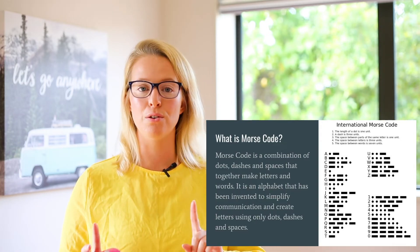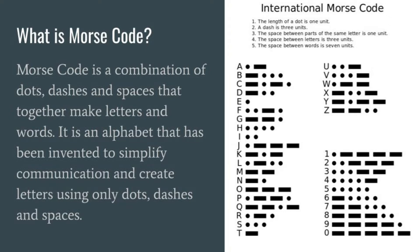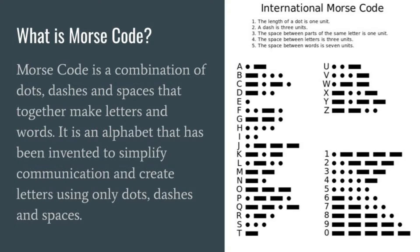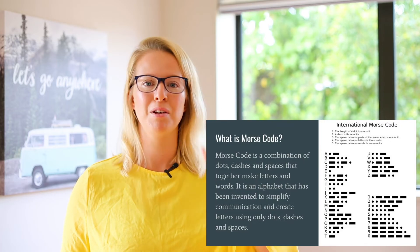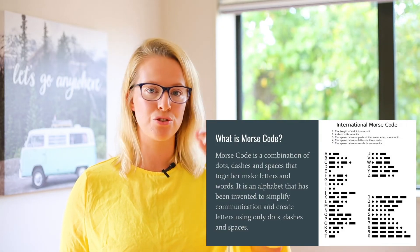So let's look even closer into what Morse code is. Morse code is a combination of dots, dashes, and spaces that together make letters and words. It is an alphabet invented to simplify communication, creating letters only using dots, dashes, and spaces. If you look at the picture up here, it's got all the letters of the alphabet and then you can see some black lines or black dots next to it — that's what people would be doing when pressing the button to make the Morse code. If it's just a little dot, they'd press it short, and if it was a longer one, they would hold down the button to make the short or longer sounds.